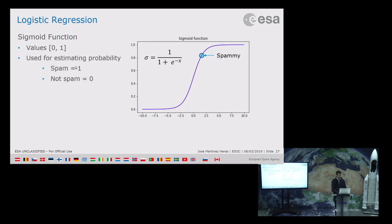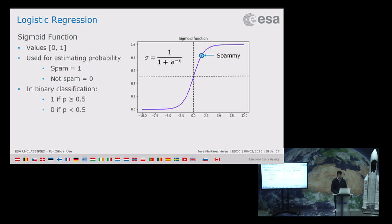For example, training a spam classifier: non-spam is class 0, spam is class 1. If on a given day we get a score of 0.85, we'd say it's quite spammy. For binary classification, if the probability is greater than 0.5, we predict class 1; otherwise class 0. The limitation is that it handles only binary classification — two classes — outputting a continuous probability between 0 and 1.